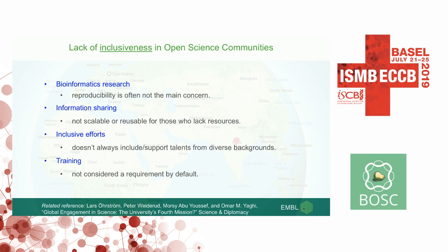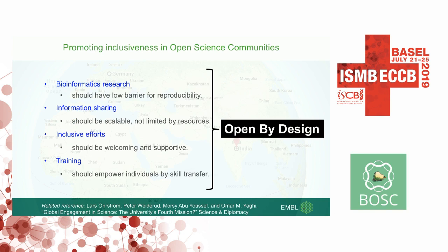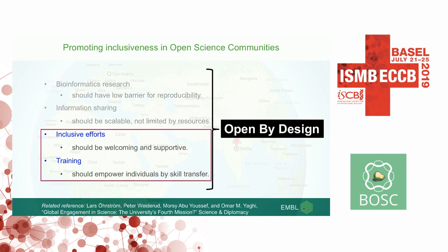So I'm now changing my made-up word 'globalness' into 'inclusiveness.' What I was talking about is a lack of inclusiveness in open science communities, because open by default does not mean inclusive. If we want to promote inclusiveness, we need to be open by design. That means low barriers for reproducibility, and all the information we build should be scalable and not limited by resources. I will be focusing on inclusive effort — welcoming and supporting members based on what they need, not what we assume they need — and training, which is about empowering individuals through skill transfer.